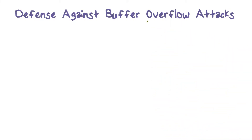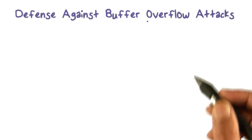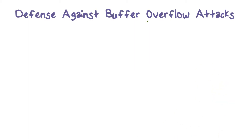What if you could not use type-safe languages? You could not use languages like Java or others that do this checking to prevent memory overflow attacks. What can we do in that case if we are stuck with certain languages for whatever reason — we talked about a few — where this is not done automatically? What should we be doing?